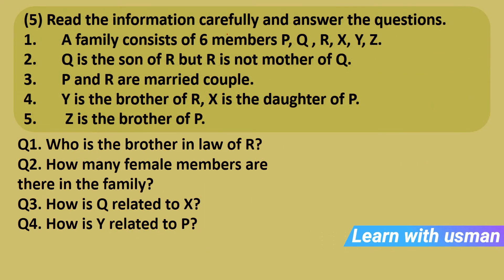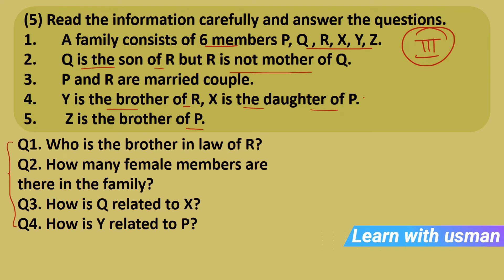Question 5 — Category 3: A family of 6 members P, Q, R, X, Y, Z. Q is son of R but R is not the mother of Q, so R is the father. P and R are a married couple, so P is the mother. Y is brother of R. X is daughter of P. Z is brother of P. Draw the family tree: R (father, plus) married to P (mother, minus); children Q (plus) and X (minus); Y is sibling of R; Z is sibling of P.